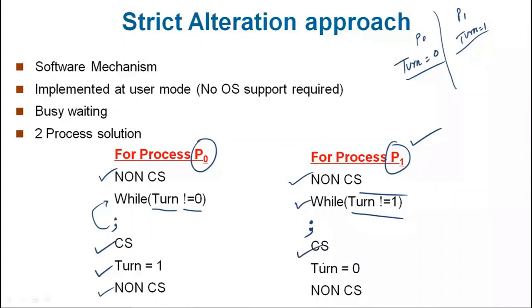Setting turn equal to 0 means passing control back to the P0 process. So P0 process executes the critical section, then P1 process executes the critical section, and the turn value cycles back accordingly.